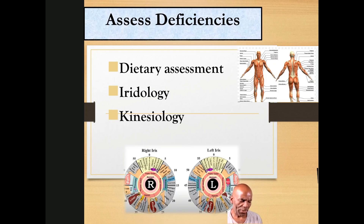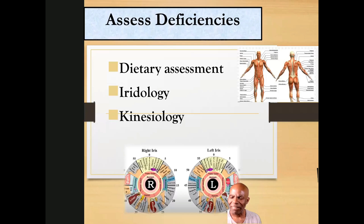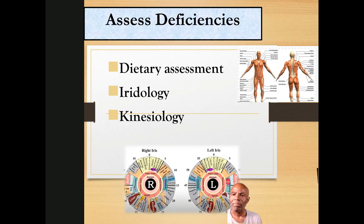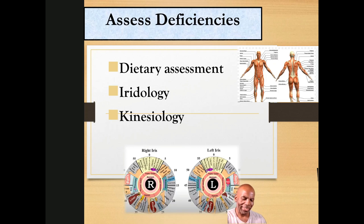Does someone have Proverbs 23:20-21? Be not among wine-bibbers, among righteous eaters of flesh, for the drunkard and the glutton shall come to poverty, and drowsiness shall clothe a man with rags. Thank you for that.